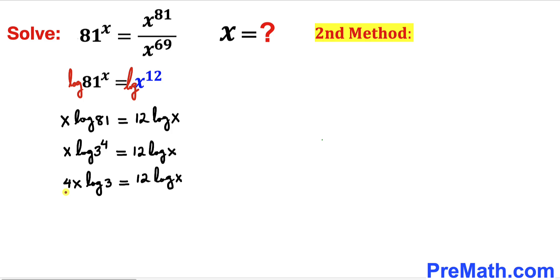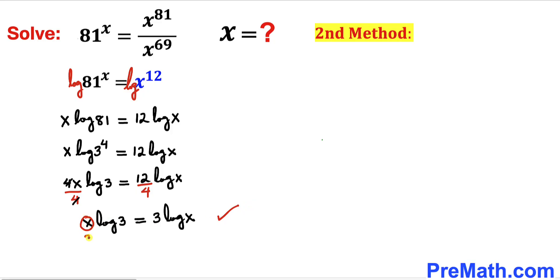Dividing both sides by 4, the 4s cancel on the left-hand side, giving us x times log 3 equals 3 times log x. We can observe that this equation is valid when x equals 3 on both sides, so our solution by the second method is also x equals 3.